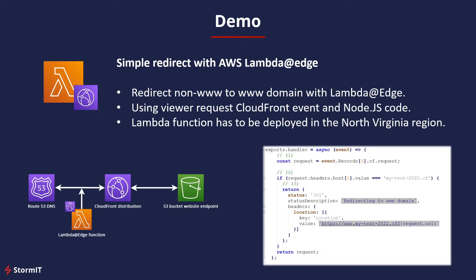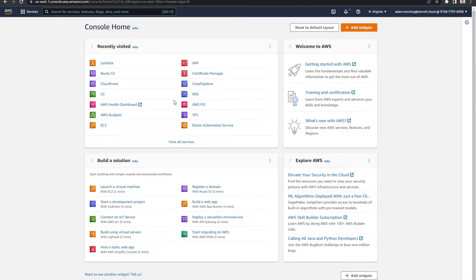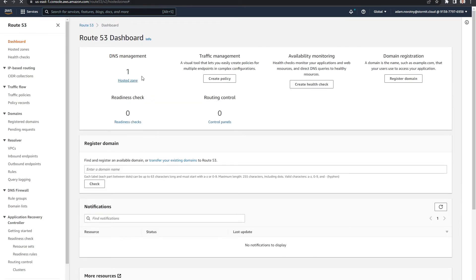For our demo, let's look at how to deploy the first Lambda at Edge function. Note that you will not find this service directly in the AWS console, as it is a bit different from services like Amazon S3, EC2, or CloudWatch. We will create a simple Node.js function that redirects users from a non-www to a www domain. In the AWS Management Console, I'll first go to Route 53, where I already have a hosted zone for my testing domain.